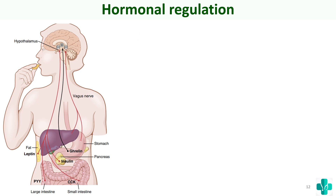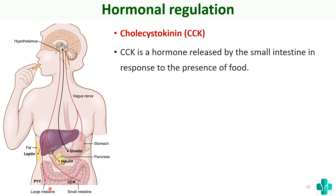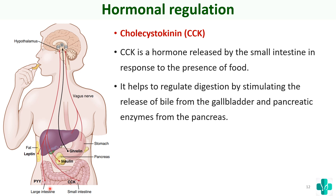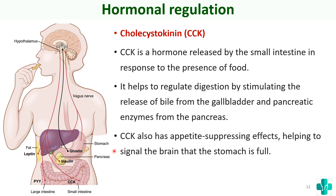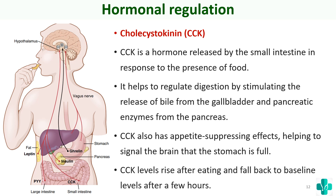CCK (cholecystokinin) is produced by the small intestine in response to food and helps regulate digestion by stimulating release of bile from the gallbladder and pancreatic enzymes from the pancreas. It also has appetite-suppressing effects, signaling to the brain via the hypothalamus that the stomach is full. CCK levels rise after eating and fall back to baseline after a few hours.